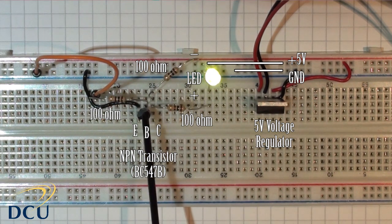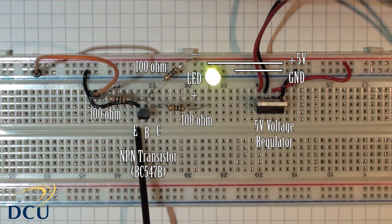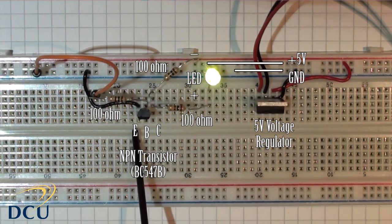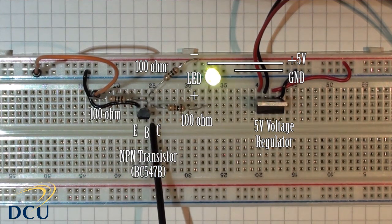Here's our transistor, and the pins are ordered from left to right: emitter, base, and collector.